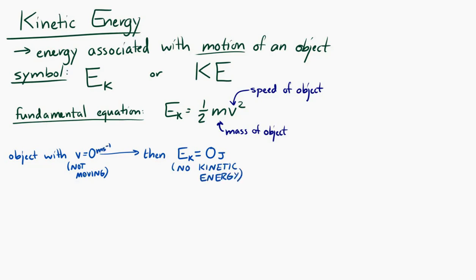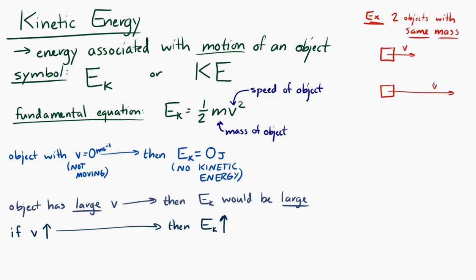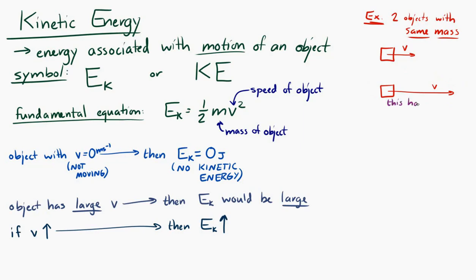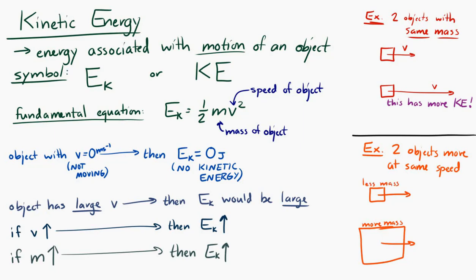If the object is not moving, it has no kinetic energy. If the object has a large velocity — if v is big — then its kinetic energy would be big. Also, if v keeps increasing, the kinetic energy will keep increasing. Let's compare two objects with the same mass: one moving slow and one moving fast. The one with the larger speed will have more kinetic energy. Similarly, if two objects move at the same speed but one has more mass, the one with more mass will have more kinetic energy.